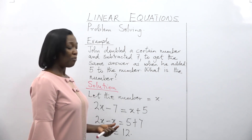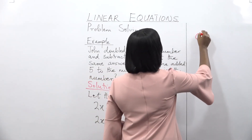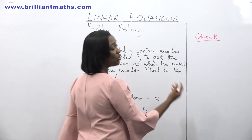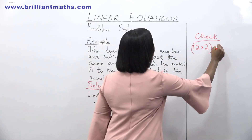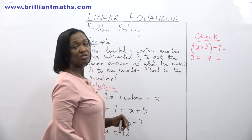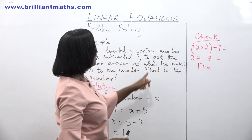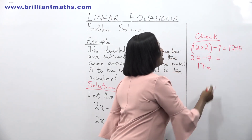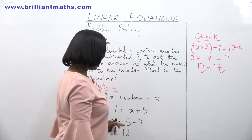Anytime you solve a problem, put your answer back into the problem to see if it's correct. So: John doubled the number, and the number is 12. Double 12 is 24. Then he subtracted 7: 24 minus 7 gives us 17. Will that be the same answer as when John added 5 to 12? 12 plus 5 is 17. And 17 is equal to 17. So that means the number John thought of was 12.